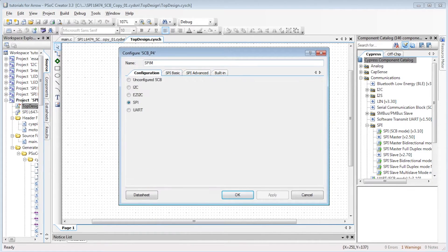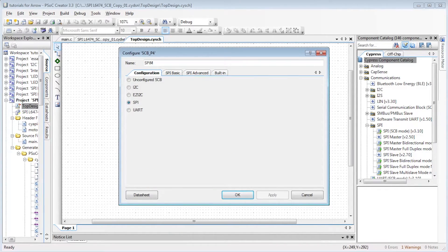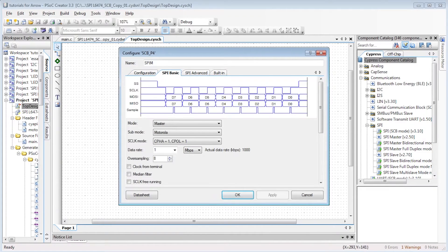In our project, let's have an SPI block, SCB mode, that we configure as SPI, master mode at 1 MHz, Motorola mode, that is the standard one.